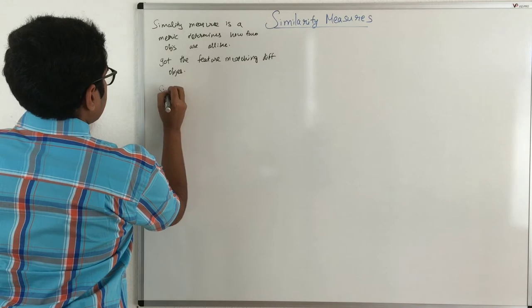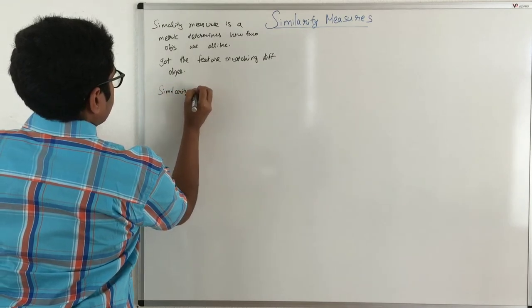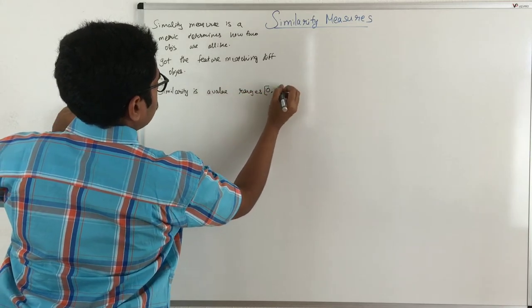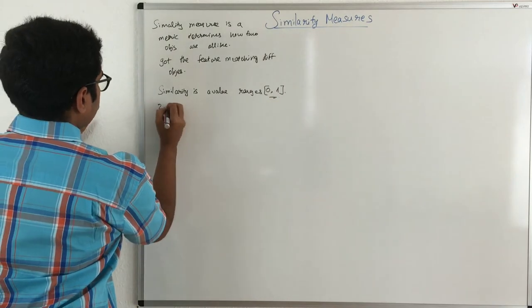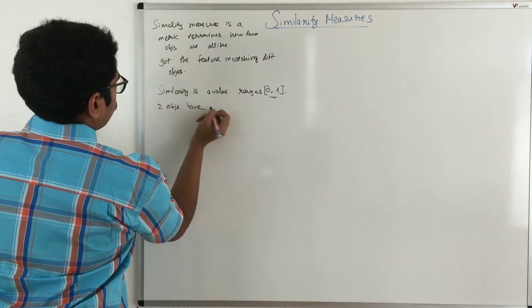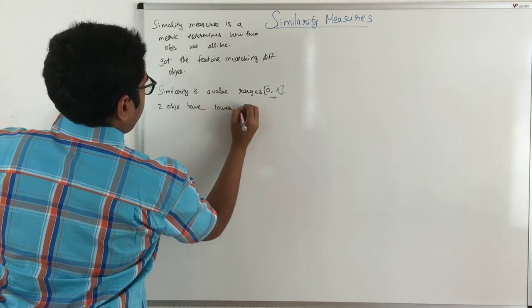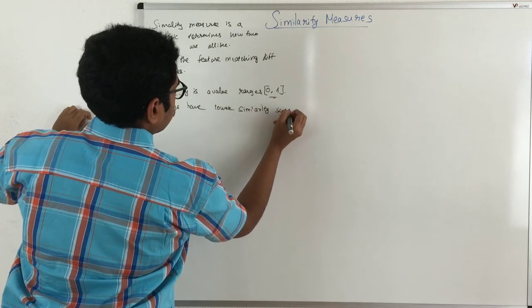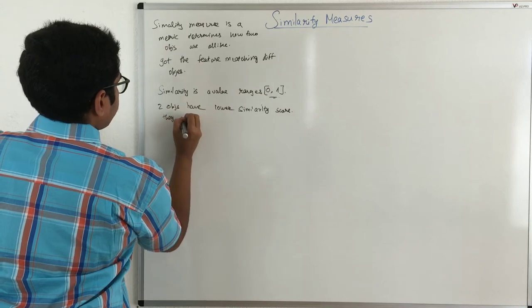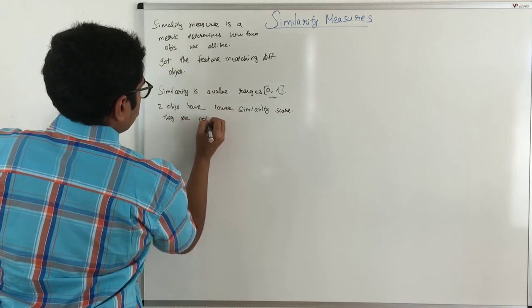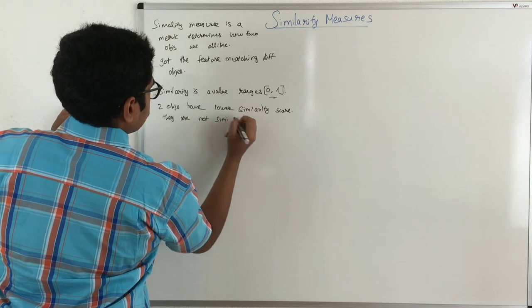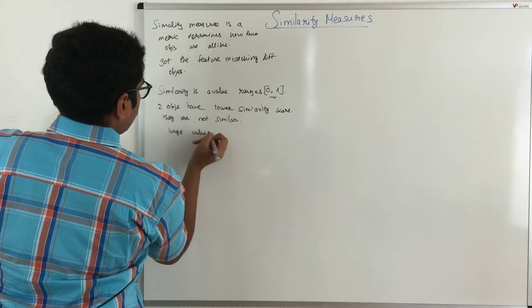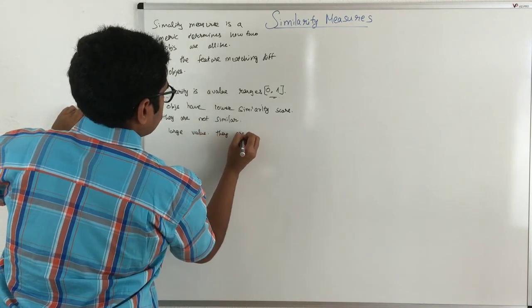So the similarity measure is a value which ranges from 0 to 1. So if two objects have lower similarity score or the distance is very small, that means they are not similar, or if they have larger value of similarity, then they are similar.